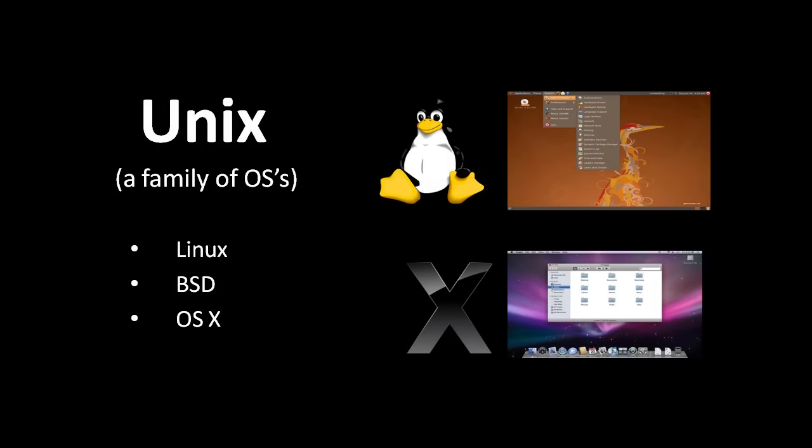The main alternatives to Windows are all descendants of the Unix operating system, which was created in the early 1970s. These descendants don't use any actual code from the original Unix, but they share some common structure and conventions.